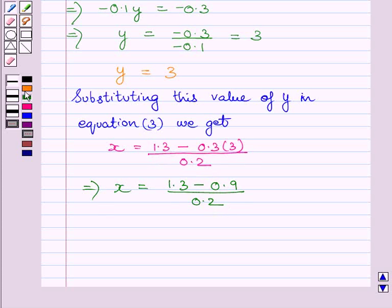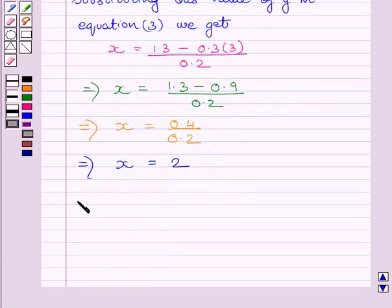This implies x is equal to 0.4 upon 0.2. So we get the value of x equal to 2. So our required solution is x is equal to 2 and y is equal to 3.